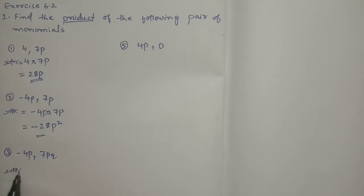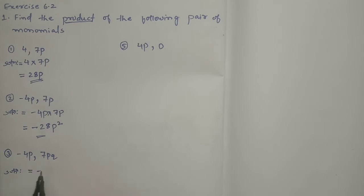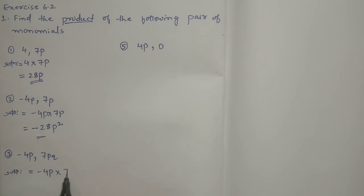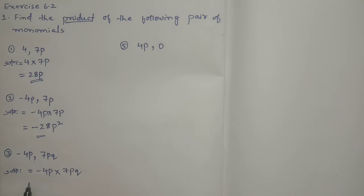Third question, solution: -4p into 7p³. First multiply the sign. Minus into plus, if sign is not mentioned the sign will be plus. Minus into plus is minus.